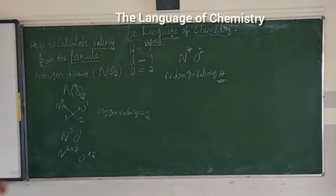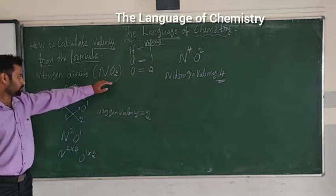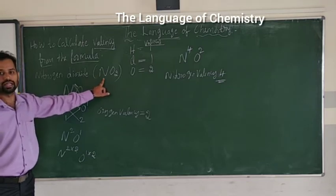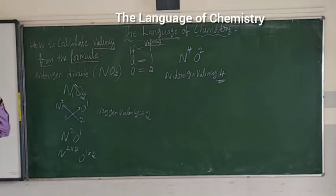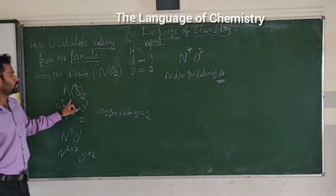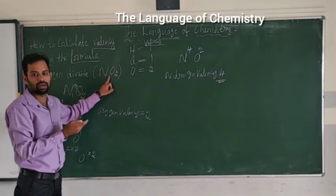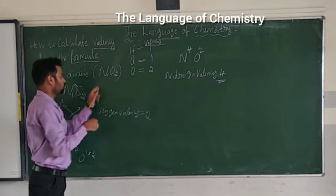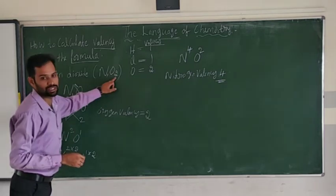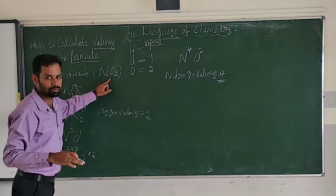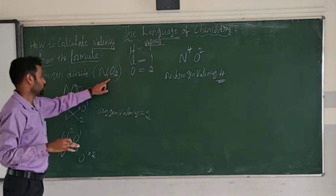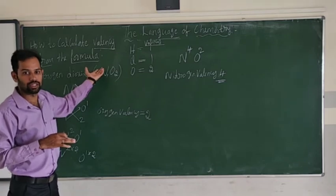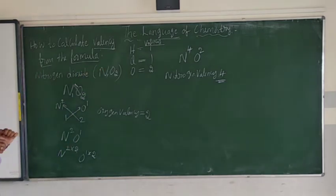To summarize: from nitrogen dioxide NO2, we find the valency of nitrogen. First write the formula. When no number is present it means 1. These are called subscripts — numbers written below the element. Then change the subscripts into superscripts by cross multiplication.